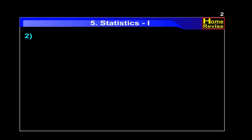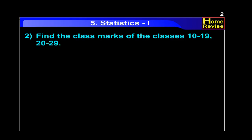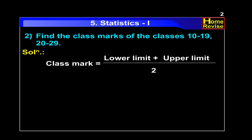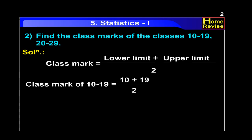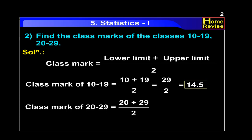Question number 2. Find the class marks of the classes 10 to 19 and 20 to 29. Class mark equals lower limit plus upper limit upon 2. Class mark of 10 to 19 is 10 plus 19 upon 2, that is 29 upon 2, which equals 14.5. Class mark of 20 to 29 is 20 plus 29 upon 2, that is 49 upon 2, so the answer is 24.5.